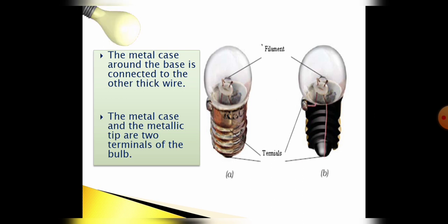Now next point is the metal case and the metallic tip are two terminals of the bulb. Jaisa ki humnay electric cell mein discuss kiya tha kis mein doh terminals hoti hain, isi tarah se bulb mein bhi doh terminals hoti hain: metal case and metallic tip.